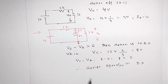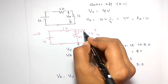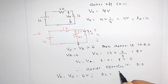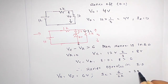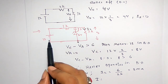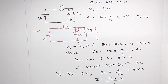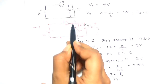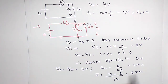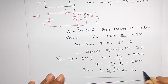Whenever the Zener operates in breakdown region, output voltage equals Zener voltage, so V0 equals Vz equals 6 volts. Load current IL equals V0 divided by 2 kilo ohms, which is 3 milliamps. Total current IE equals 12 minus 6 divided by 1 kilo ohm, which is 6 milliamps. Therefore, IZ equals IE minus IL, which is 6 minus 3 equals 3 milliamps.